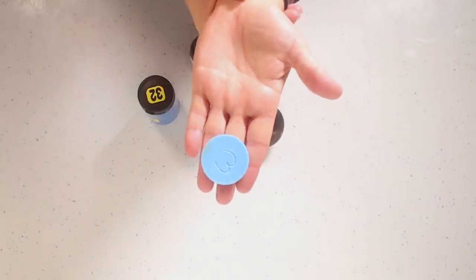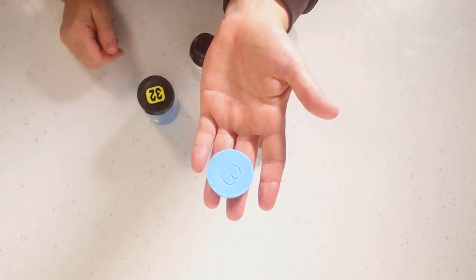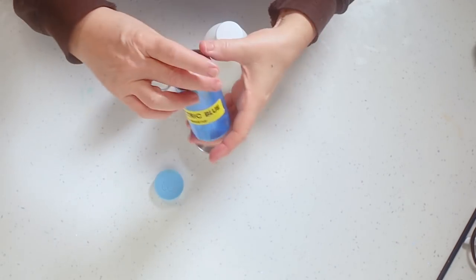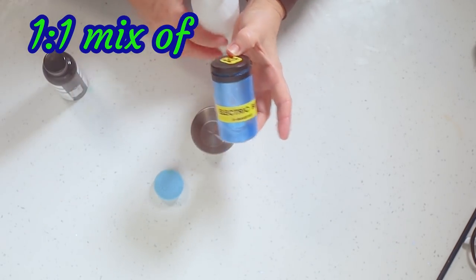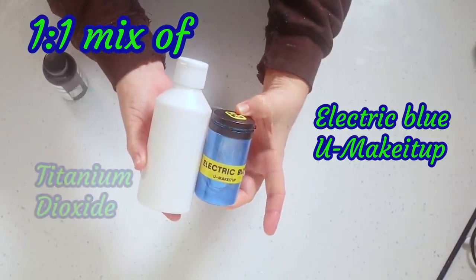For the main base of my soap, I just want a nice pale blue that I blend myself. This I make up with a one-to-one mix of Electric Blue from You Make It Up and some titanium dioxide.